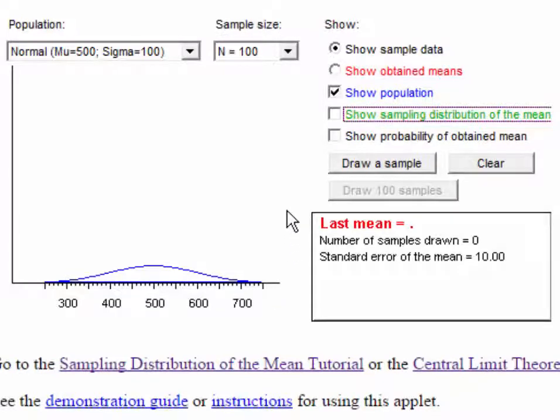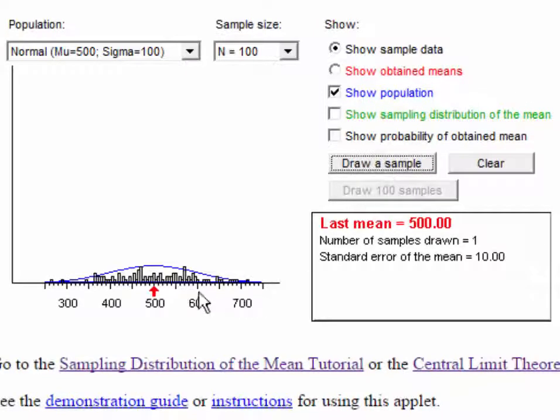We can simulate drawing a sample of 100 cases by simply pressing this button, draw a sample. Now we see a histogram showing little rectangles illustrating the distribution of individual scores, 100 scores, and they range roughly from 300 to 700, a little beyond. But the bulk are in the middle. The red arrow shows the sample mean. We happened to hit the sample mean exactly with this sample. That's somewhat unusual.